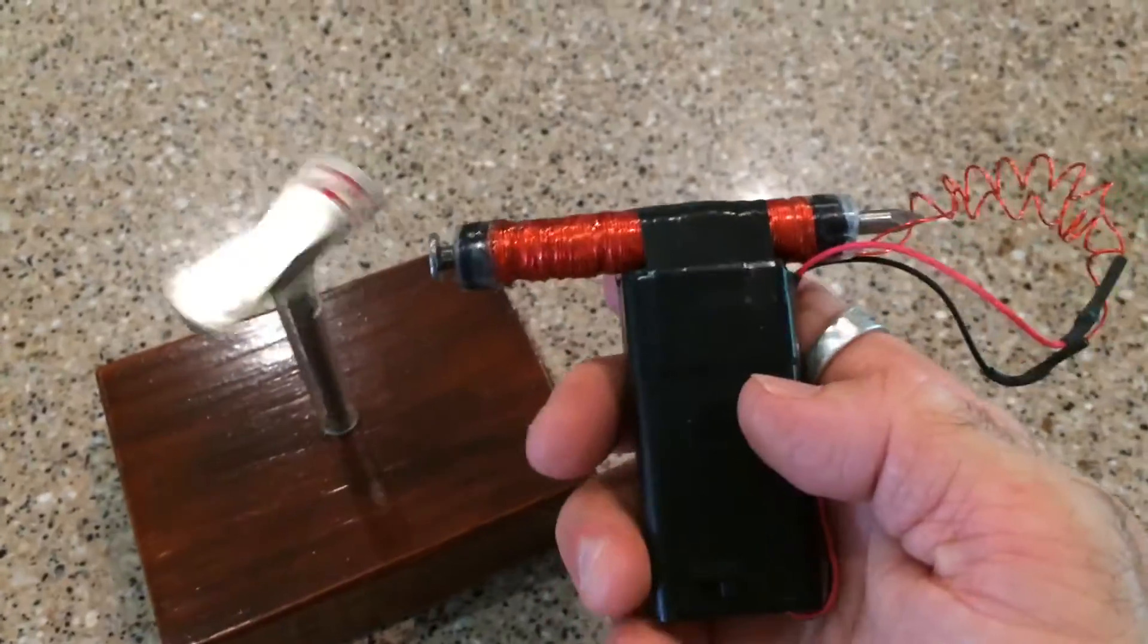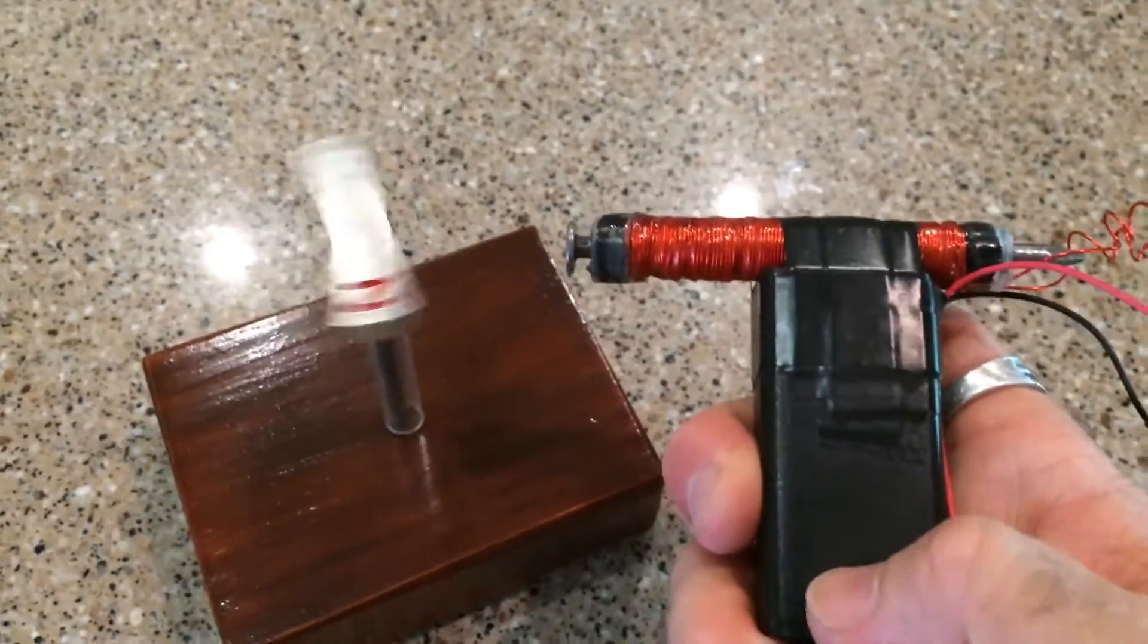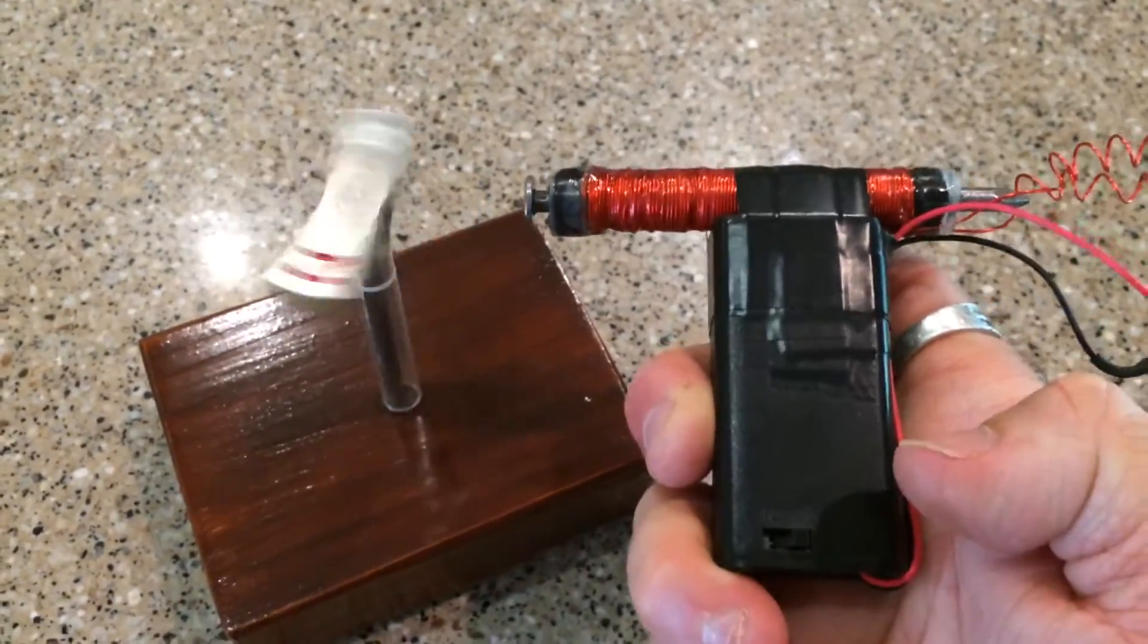Now, look at that. I've got a perfect motor out of it. And this demonstrates how electromagnetism and a magnet equals a motor. You see that?